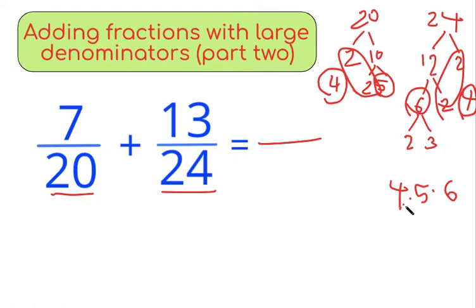We only need to use the 4 one time when we're looking for the denominator of this added fraction. 4 times 5 is 20, and 20 times 6 is actually 120. So the least common multiple of 20 and 24 is 120.